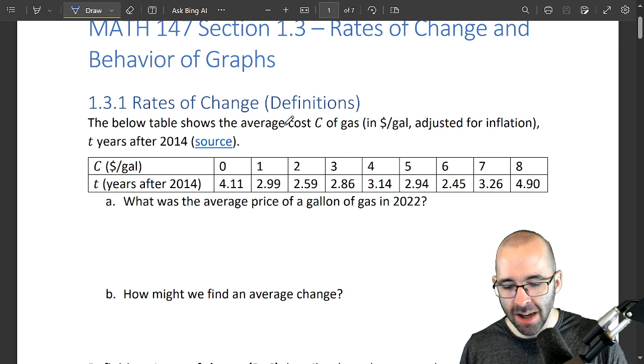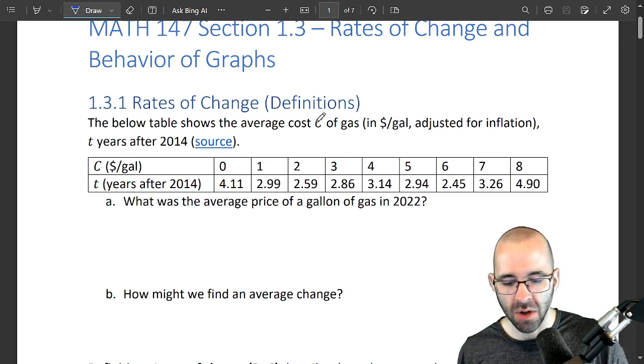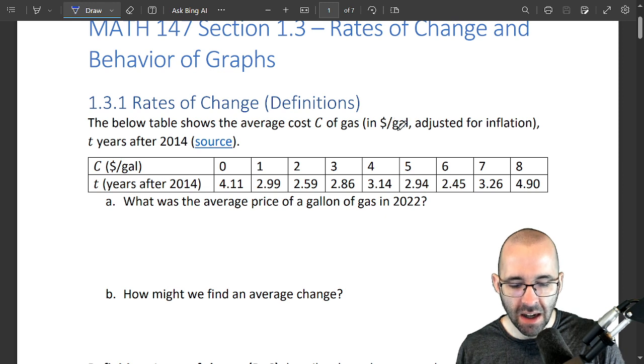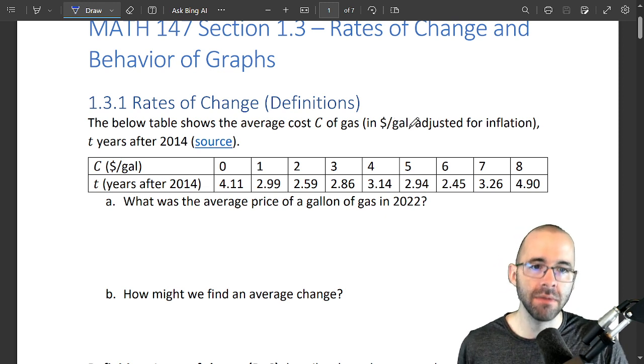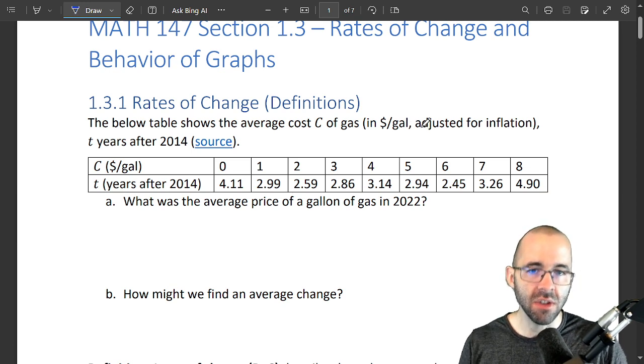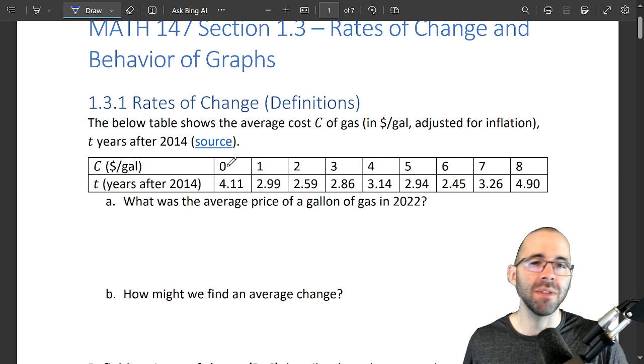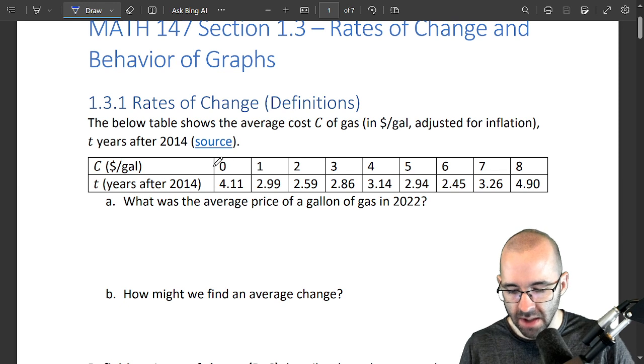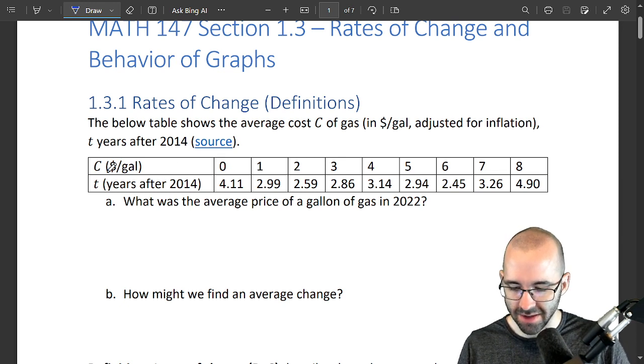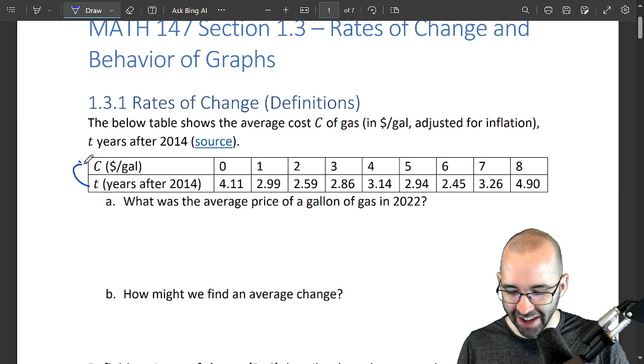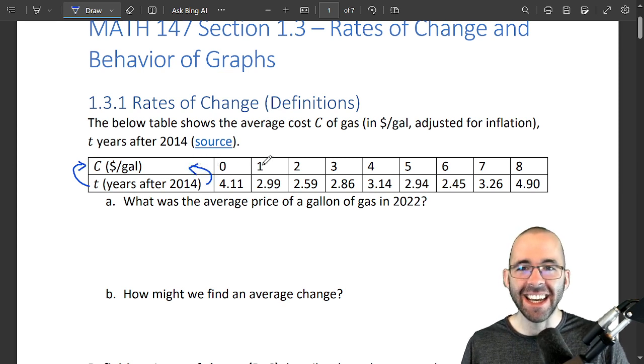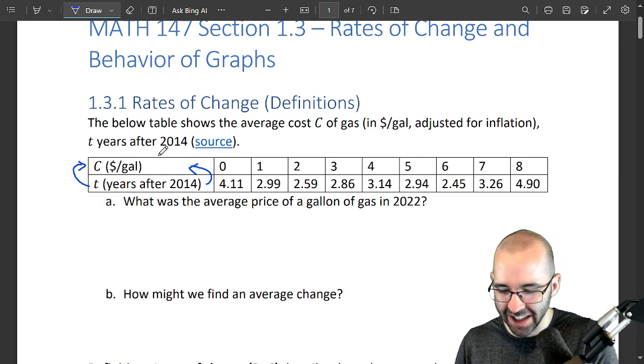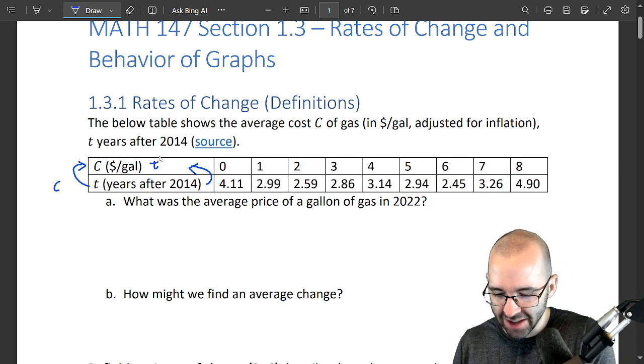Let's start with this table, and this table shows the average cost of gas. We'll call that variable C, and C is going to have units of dollars per gallon, very usual in the United States. These costs are adjusted for inflation, so we're going to try to compare apples to apples. This is going to be t years after 2014. Oops, these labels are switched. We're starting when t is equal to zero—this should be t up here and this should be C down here.